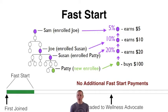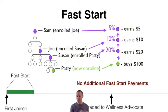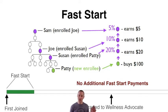Fast Start is paid during the first 60 days of the enrollee's account. During that first 60 days, that's all you get for Fast Start, and that's for the lifetime of the account. It doesn't begin again when they upgrade to a wellness advocate or when they are downgraded to a wholesale customer or any other conversions. It's only during the first 60 days of the lifetime of their account — no additional Fast Start payments.